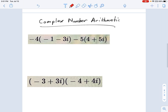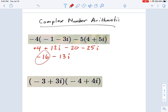Now complex number arithmetic is really very simple. If you know regular arithmetic, you just treat i like it's a variable, like x or something. So in this example, I'll say negative 4 times negative 1, that's positive 4. Negative 4 times negative 3i is positive 12i. Negative 5 times 4 is minus 20, and negative 5 times positive 5i is minus 25i. We can still simplify this by combining like terms. 4 minus 20, that's negative 16. And 12i and 25i, those are both imaginary terms, so we're going to combine those and we get minus 13i. So here's our complex number, negative 16 minus 13i.